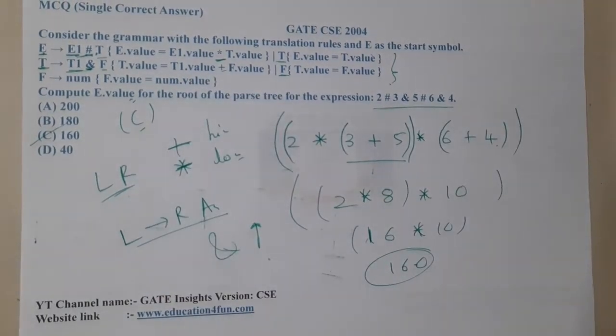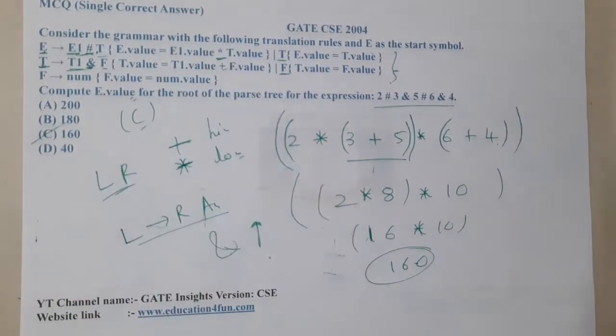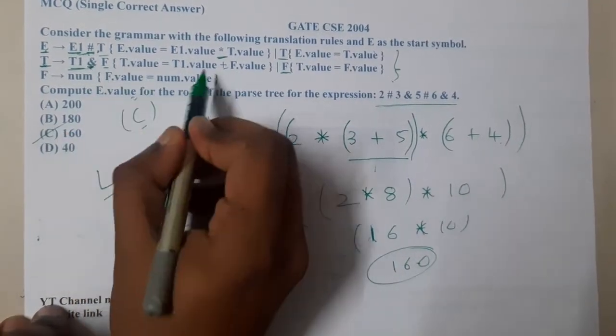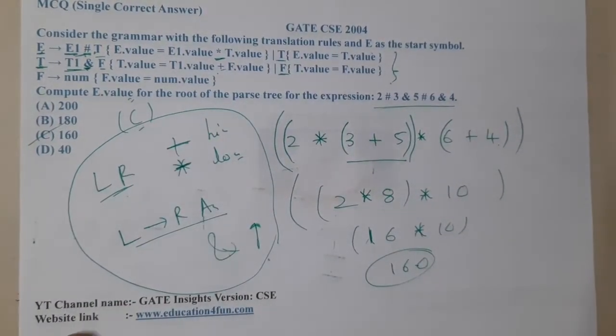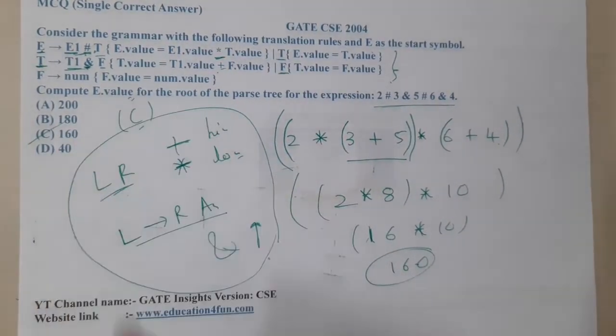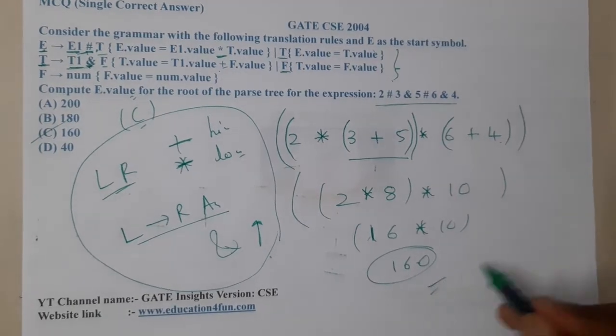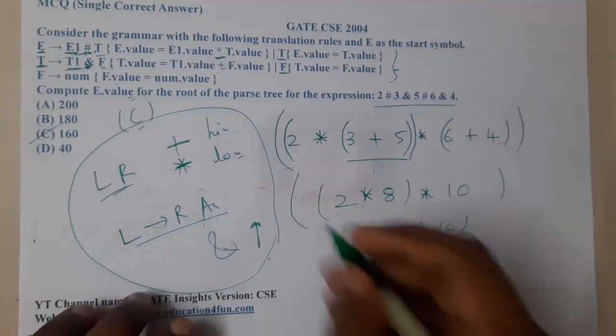These questions are really easy guys. The only thing is you should understand the grammar - what exactly they are trying to say. Here I observed ash means star, and based on that we already know how to find this precedence and the order associativity. Based on our trick we have solved it and we got the answer as 160. C is the correct answer.